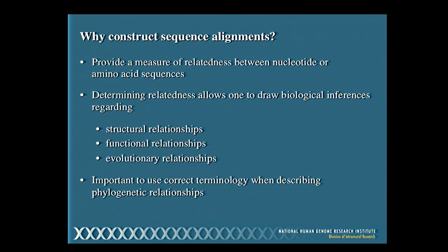Let's start by reinforcing the importance of alignments as one of the most powerful approaches in the study of sequence data, specifically for determining similarity and deducing homology. Why bother constructing sequence alignments? Whether we're talking about a pairwise alignment of two individual sequences or a multiple sequence alignment of a collection of related sequences, we're trying to get a measure of relatedness between nucleotide or amino acid sequences — which allows us to draw biological inferences about structural, functional, or evolutionary relationships.